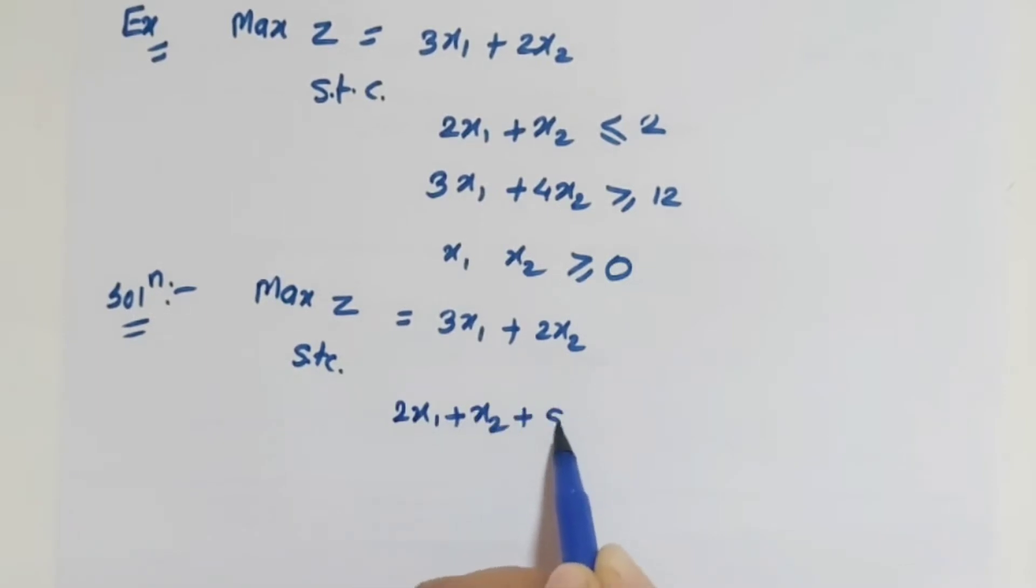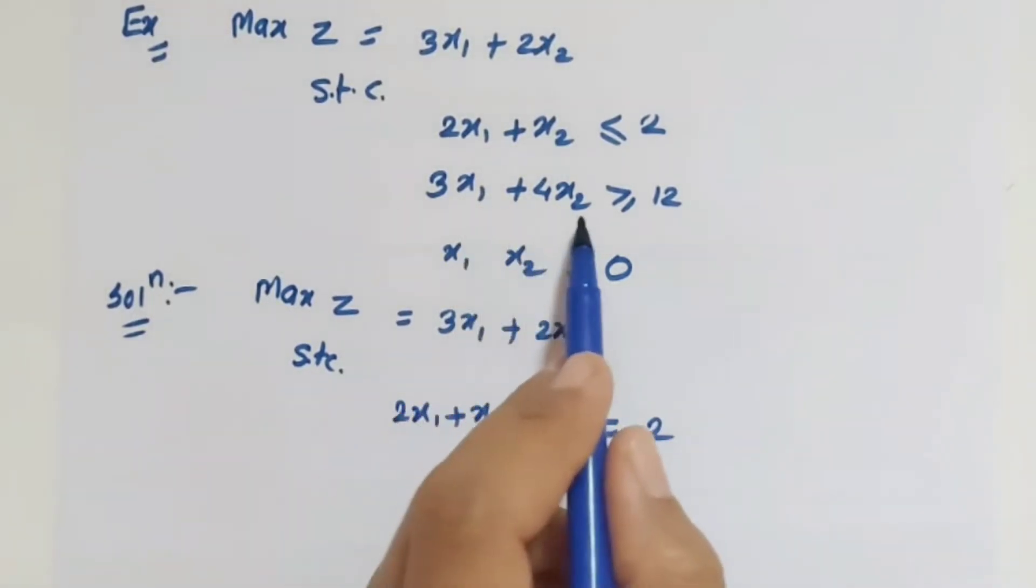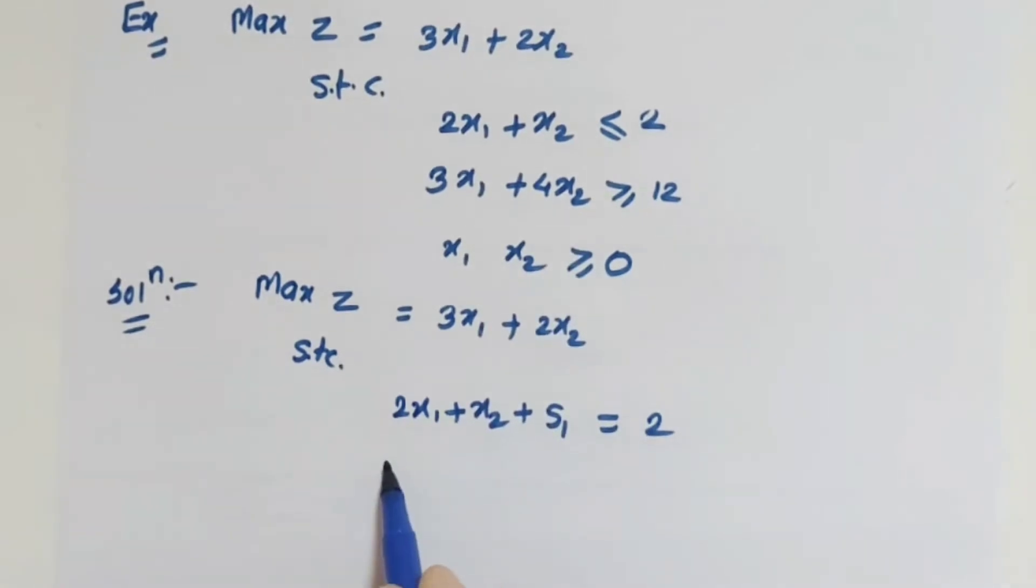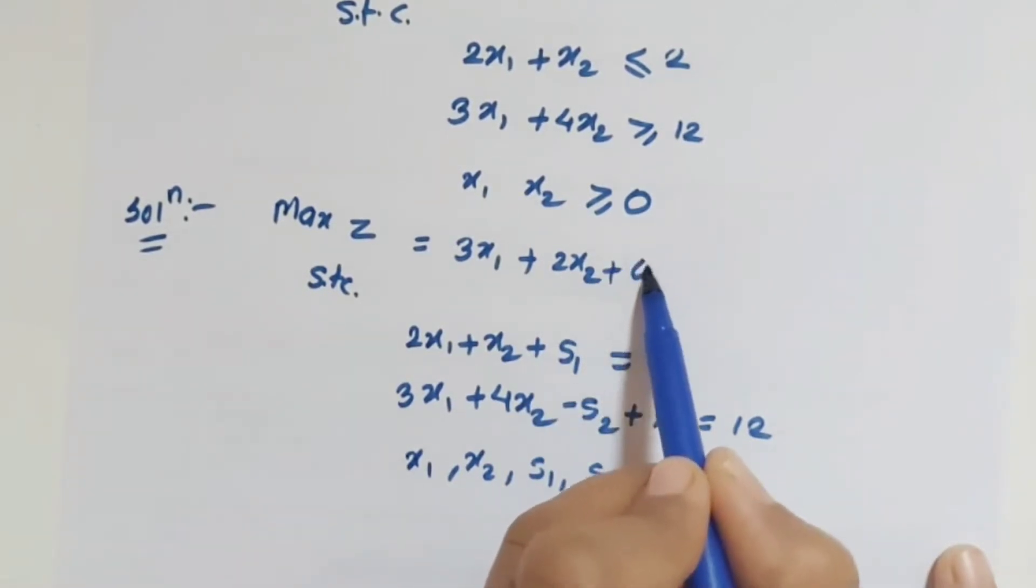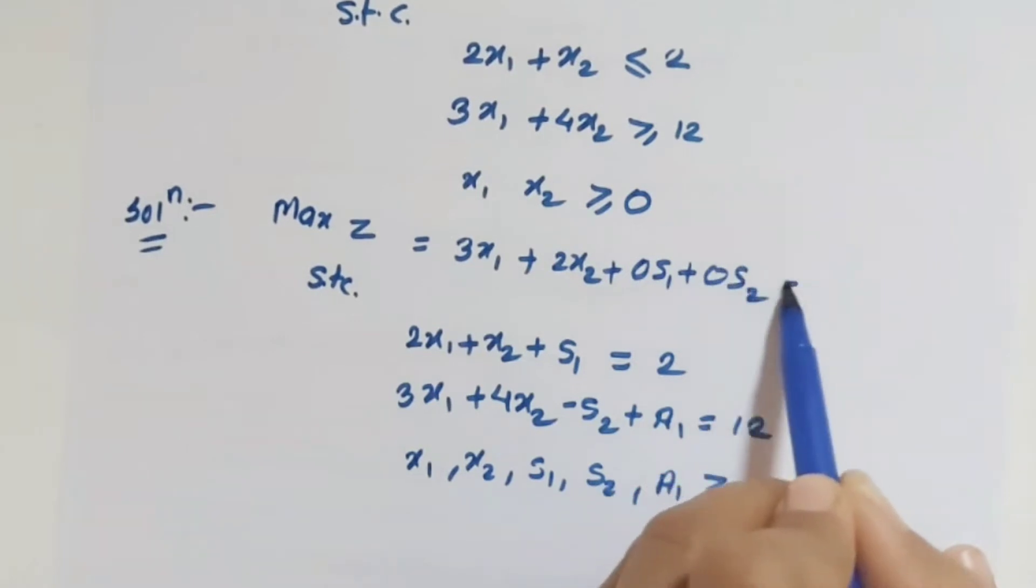This quantity is less, so we have to add something. Let us consider it is s1. This is already in greater than form, so we have 3x1 plus 4x2 greater than, so we have to subtract s2 and add a new variable that is an artificial variable a1. So it equals 12. All variables greater than or equals to 0, so x1, x2, s1, s2, and artificial all are greater than or equals to 0. Now cost is x1 corresponding 3, x2 corresponding 2, slack/surplus corresponding 0, and artificial corresponding minus m.